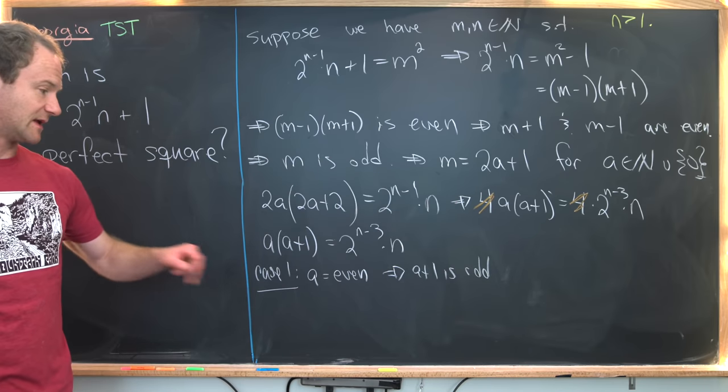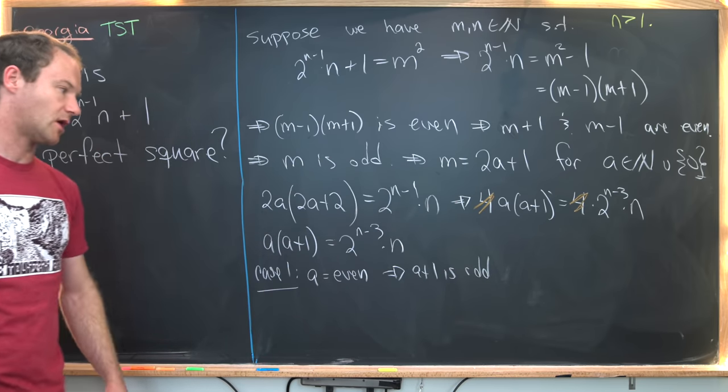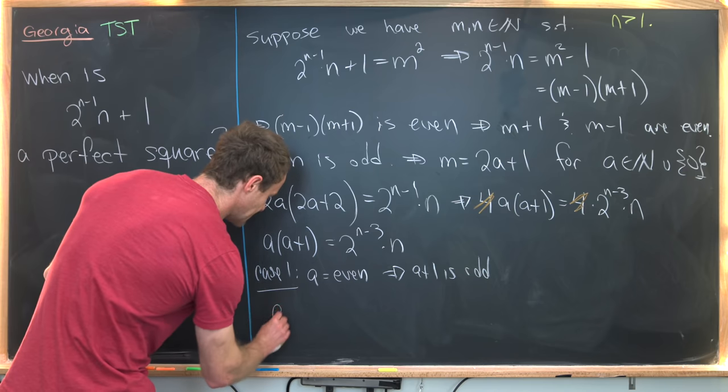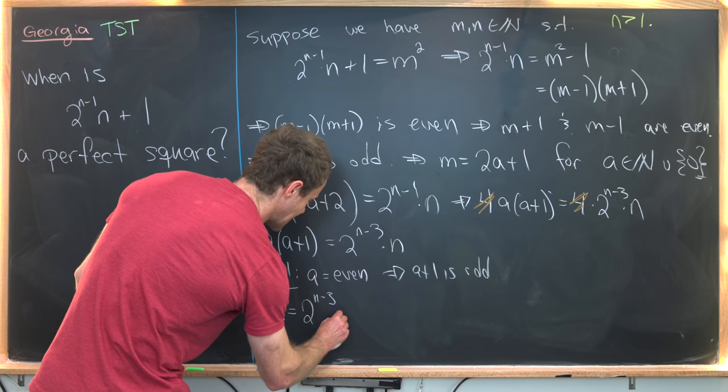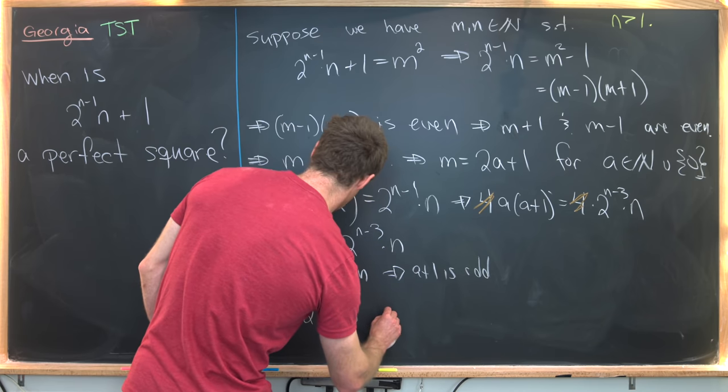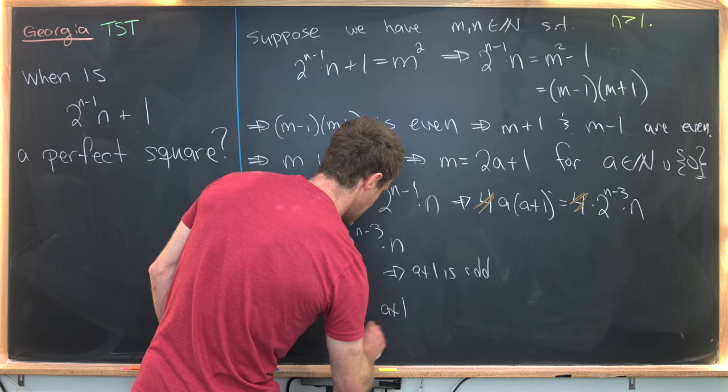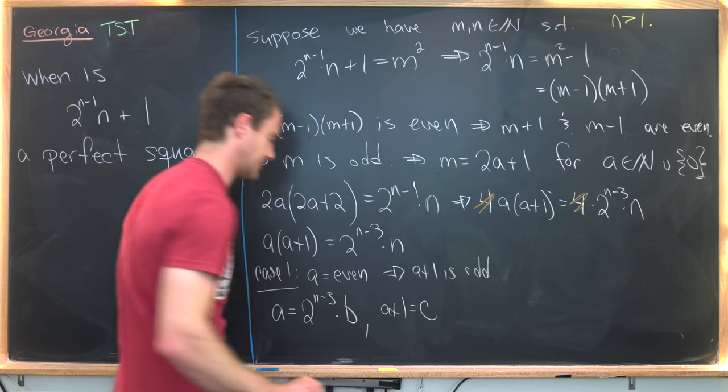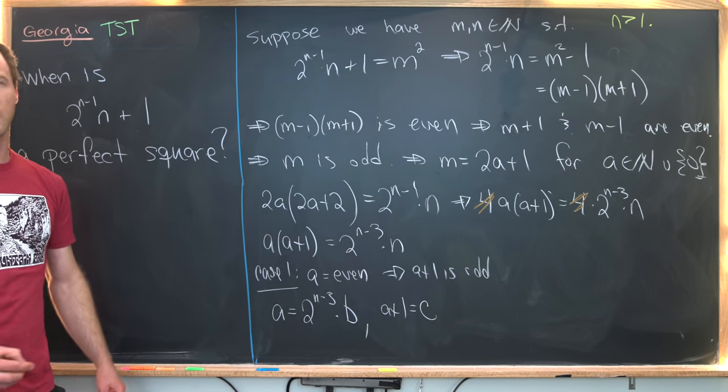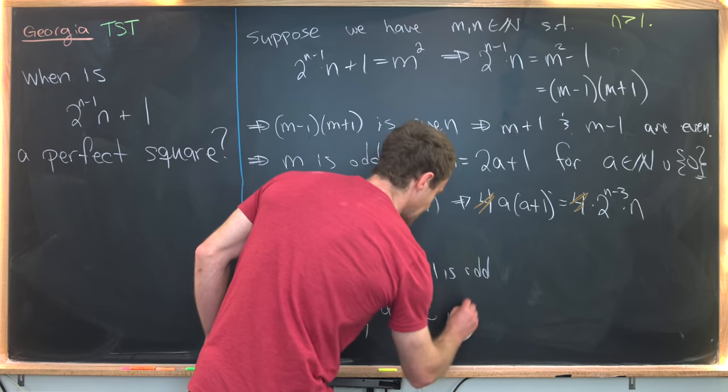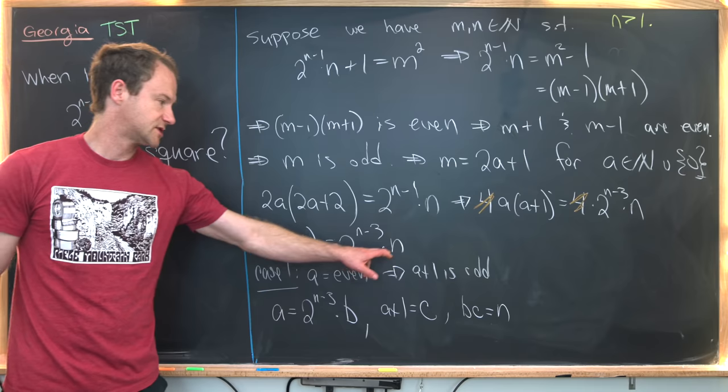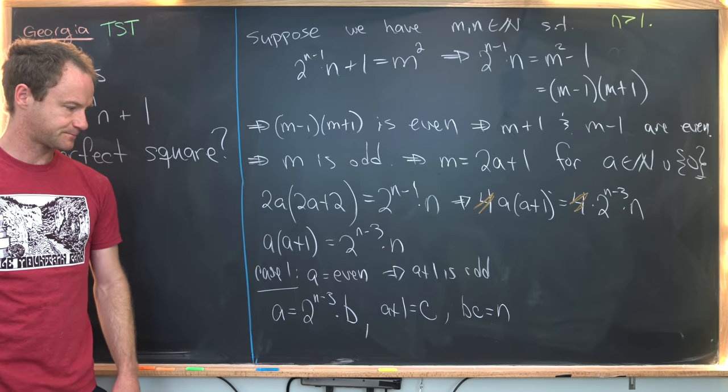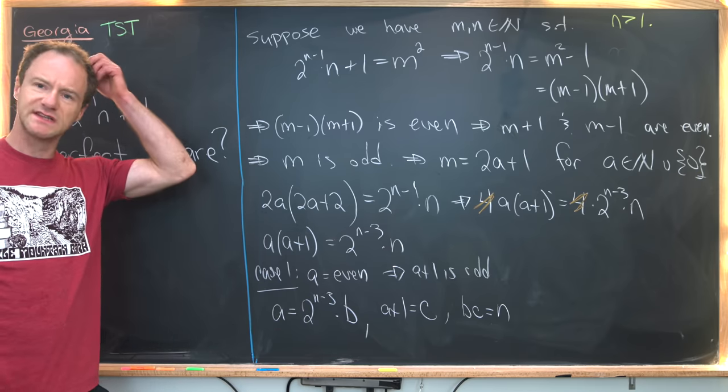But like I said, if a is even, it gobbles up all of those powers of 2, that means we can write a as 2^(n-3) × b, and then we can write a+1 as c. Well, you might say, why do we need this b and c? That's because we need b × c to be equal to n to create the rest of this.